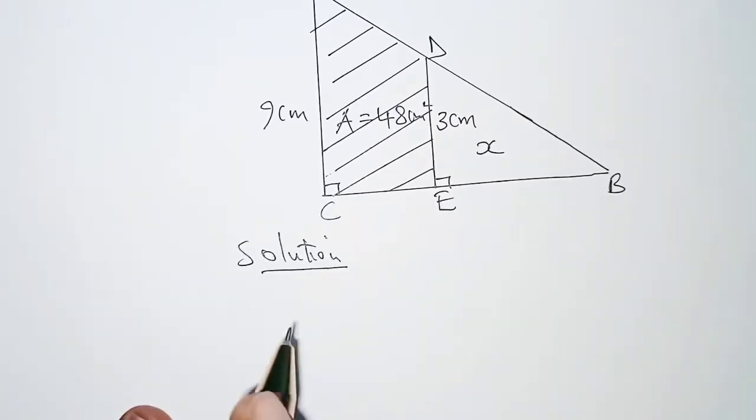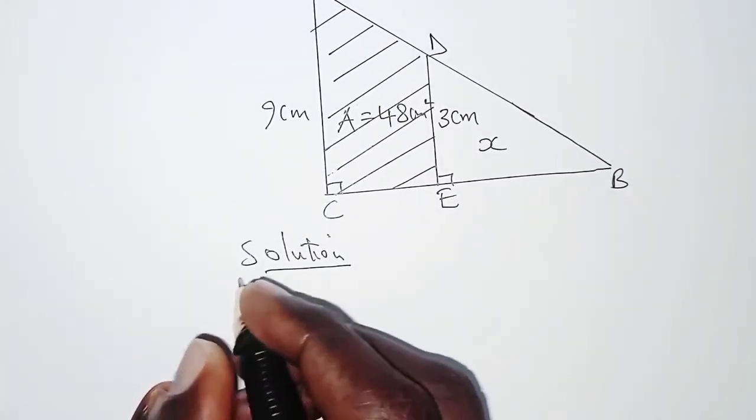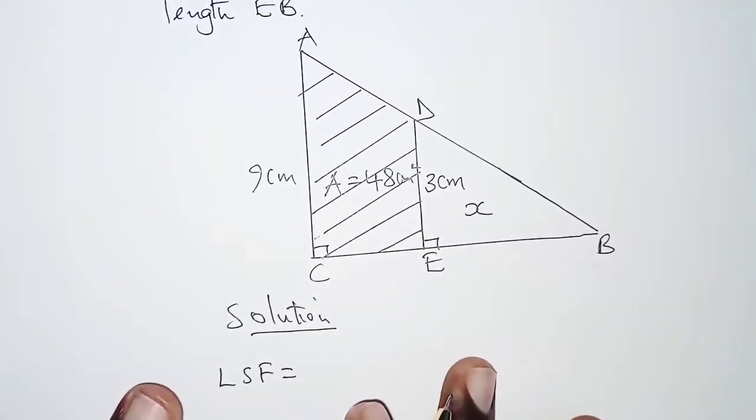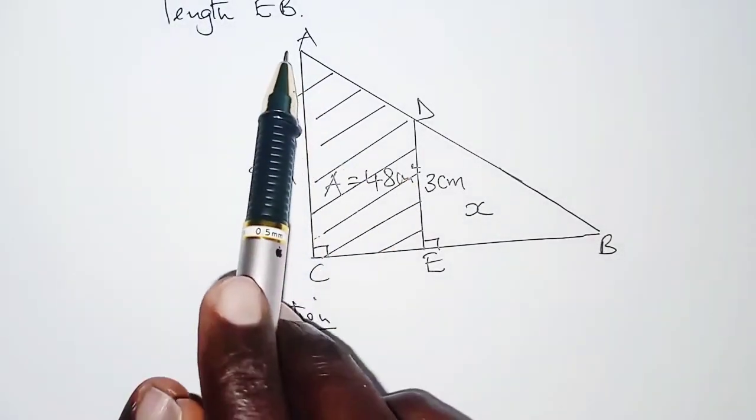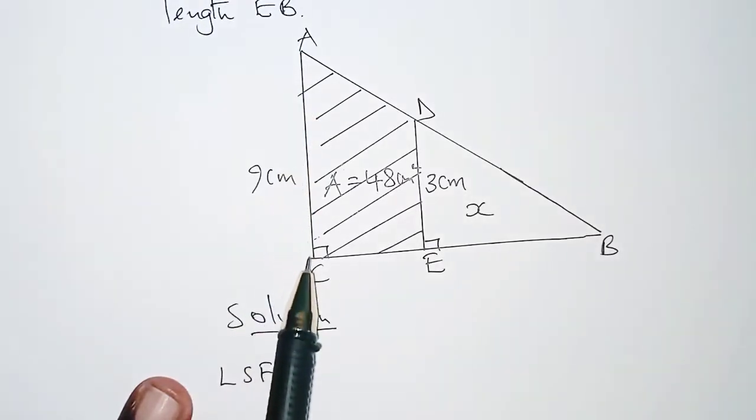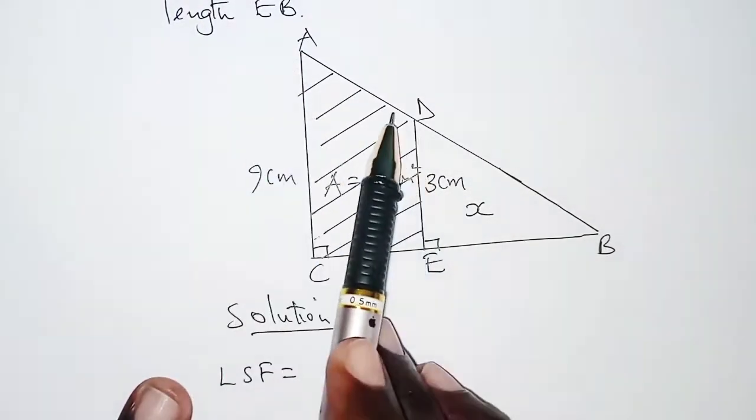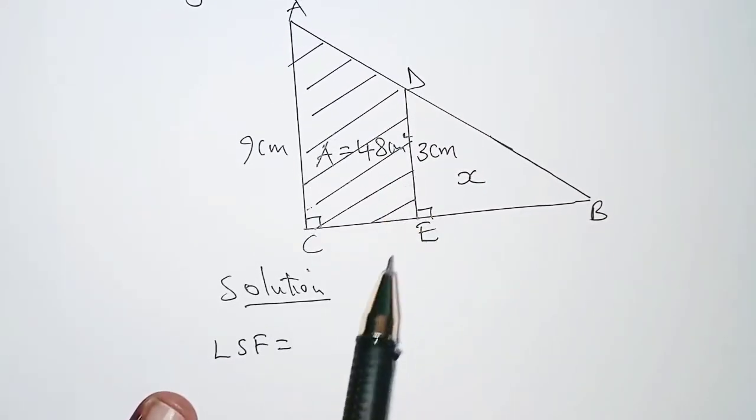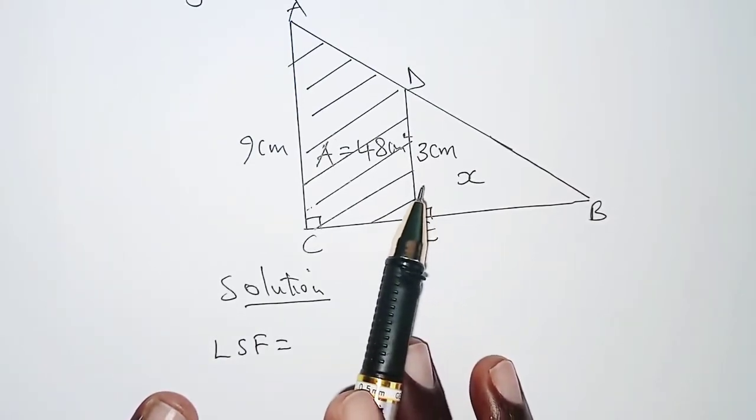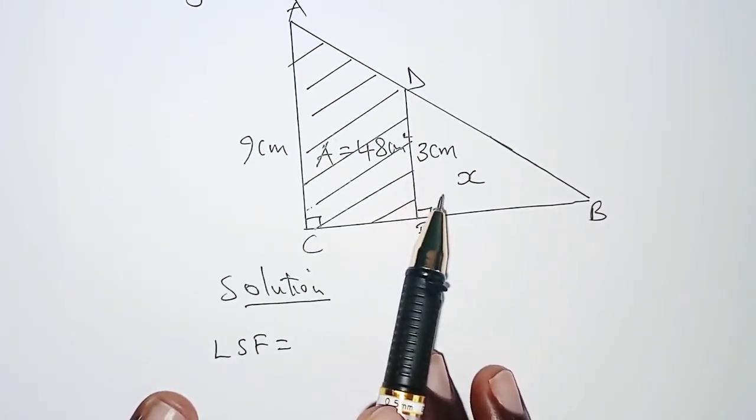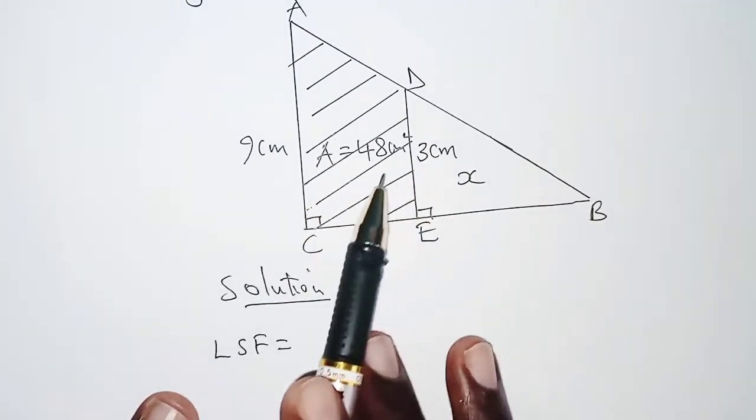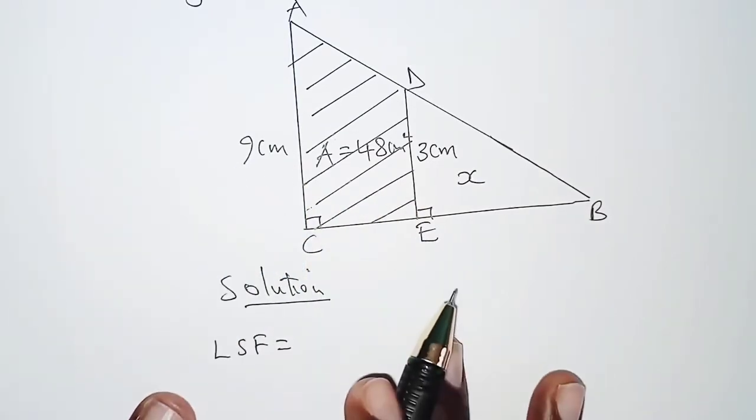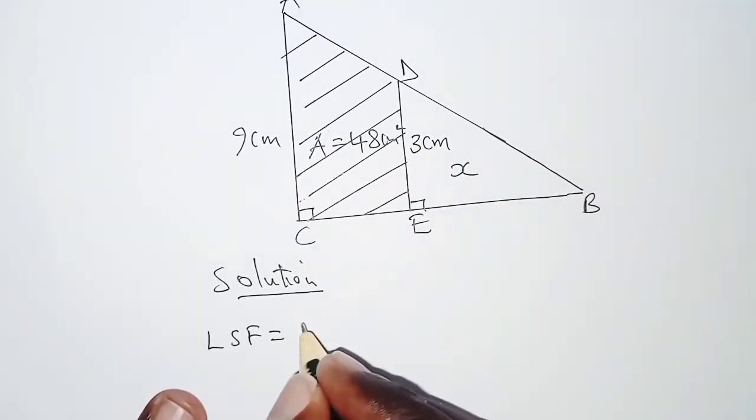First we are going to get the linear scale factor. We are getting linear scale factor because in this triangle, as you can see, we have two similar triangles: a bigger one ACB and a smaller one DEB. Since they are similar, we are going to get the linear scale factor by comparing the ratios of corresponding lengths. We have two corresponding lengths which are already given: length DE and AC, which are 3 centimeters and 9 centimeters. So we can use that to get the linear scale factor which is 3 over 9.